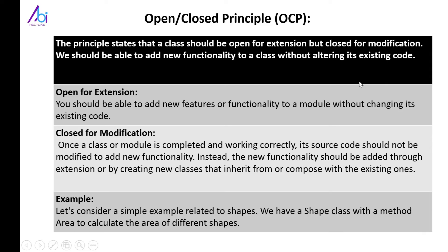The second SOLID principle is the Open/Closed Principle. It states that a class should be open for extension but closed for modification — we should be able to add new functionality without altering existing code. 'Open for extension' means you can add new features without changing existing code. 'Closed for modification' means once a class is completed and working, its source code should not be modified; new functionality should be added through extension or by creating new classes.